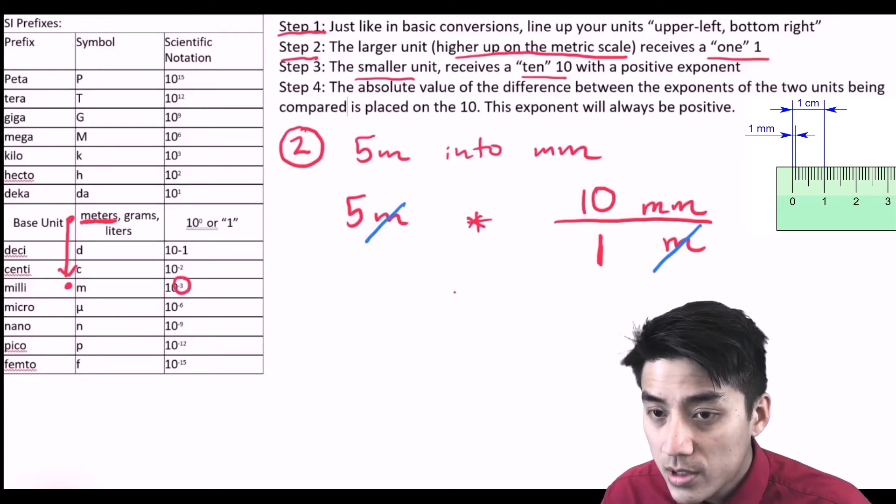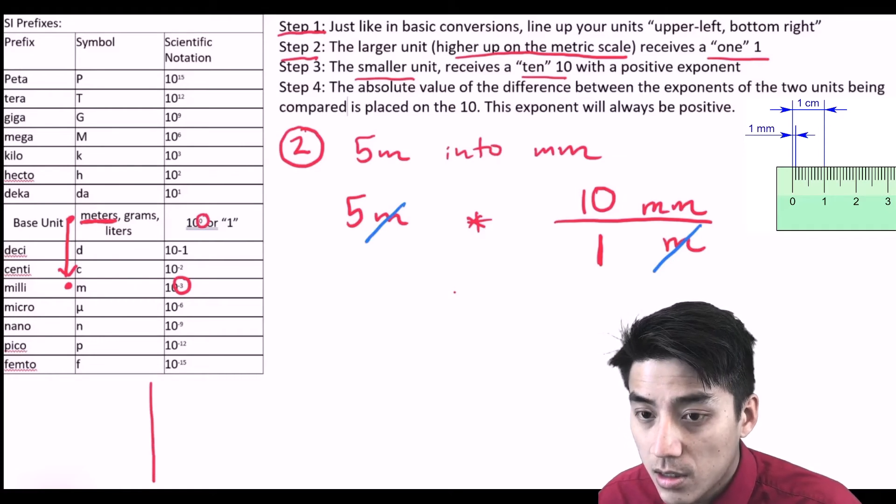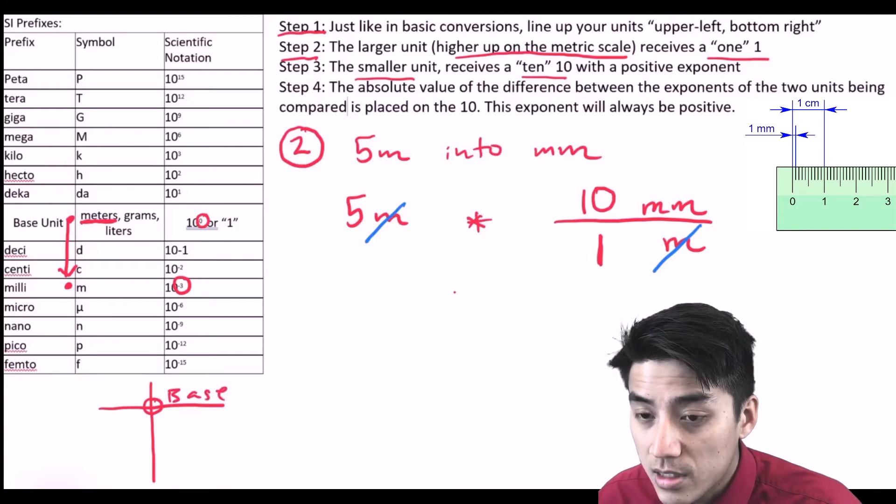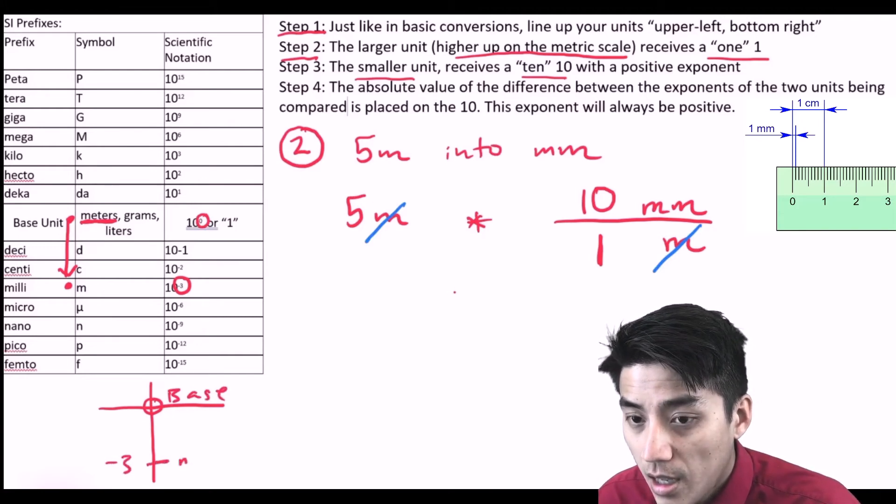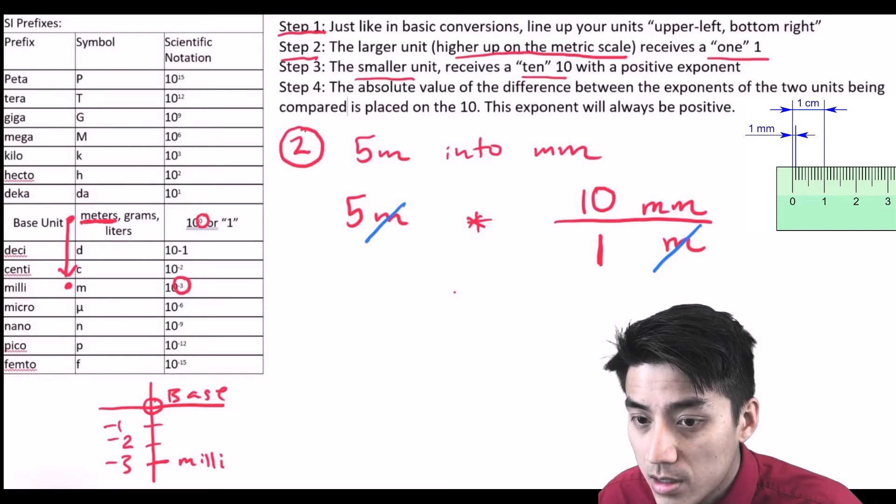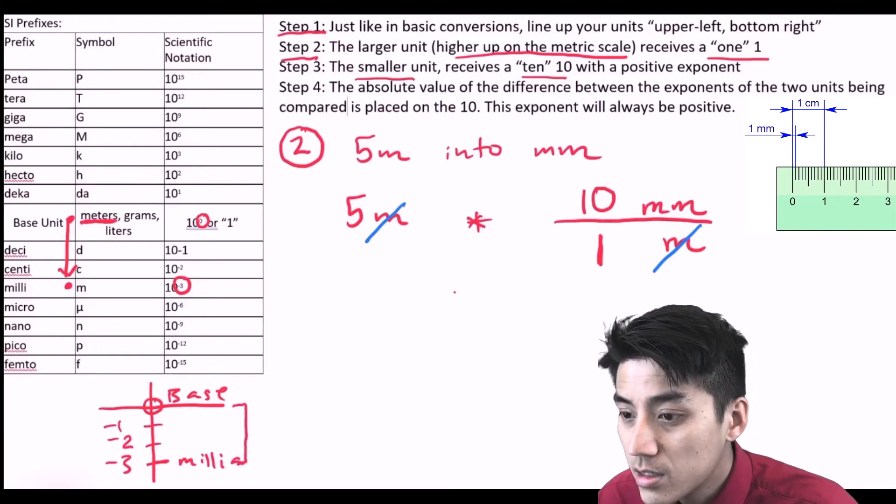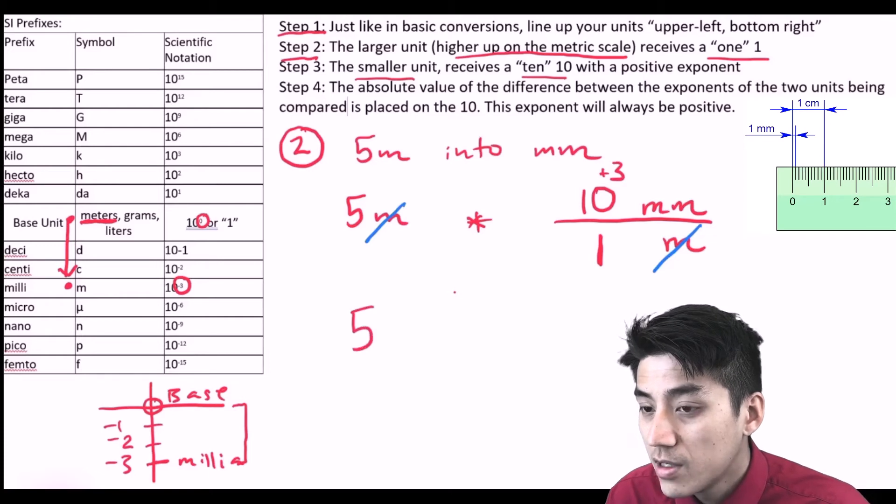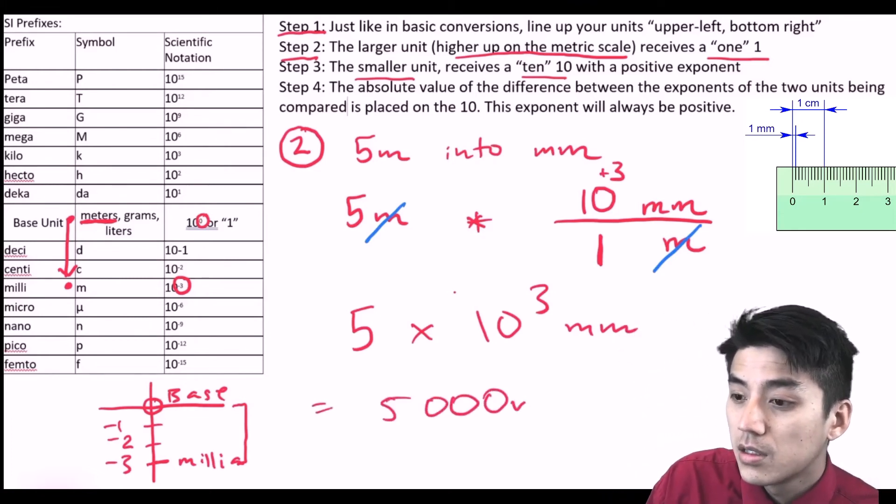Step four is just comparing the numbers of the two units. Let's bring up our number line again. Our base unit is at zero, and milli is at negative three. The absolute distance between them is three. It's a net distance of three. So we're going to put a positive three as the exponent. Our answer now is just five times ten to the third millimeters, and I can rewrite this as 5,000 millimeters.